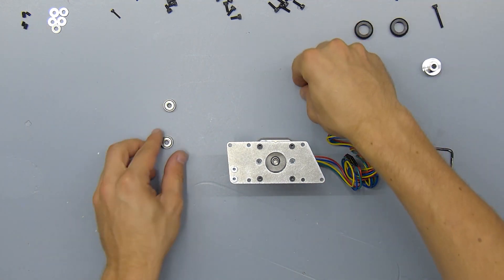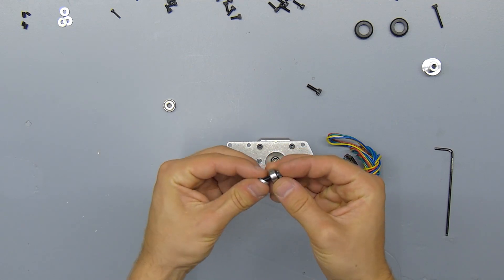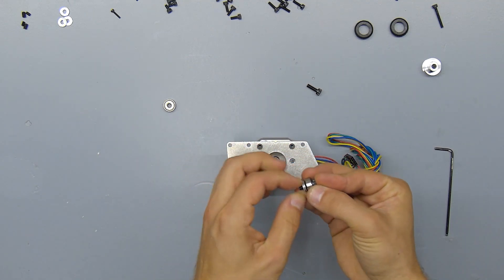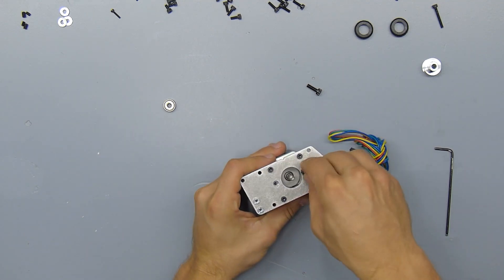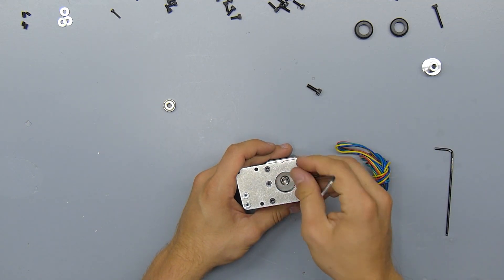Next up we'll install the idler bearings for the belt. For this we'll use an M4 screw, a bearing and two washers, and install that whole assembly right next to the motor shaft. And another one just like it on the opposite side.